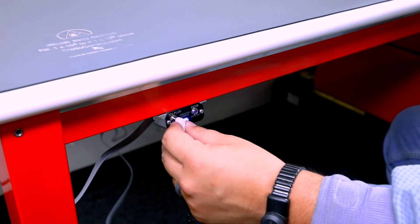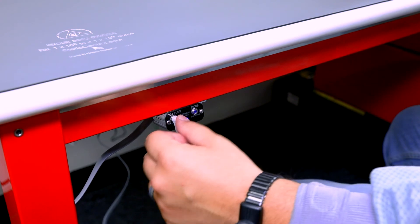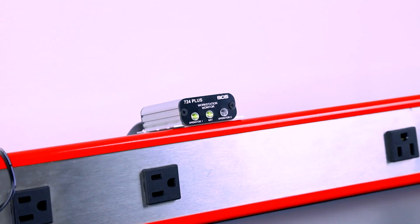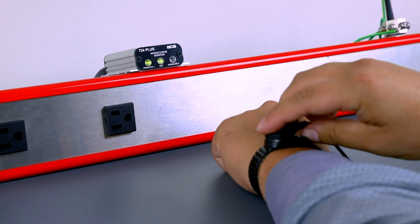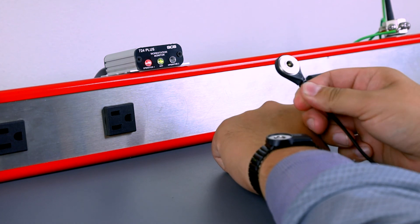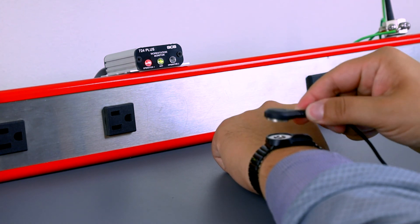The 724 Plus Monitor is now fully installed and ready to monitor an operator. Install a dual wire wrist strap snugly to the wrist. Connect the cord to the wrist strap and plug the wrist strap cord into the operator jack on remote. The operator is now grounded and being monitored by the 724 Plus Monitor.